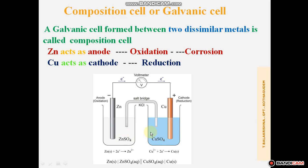When you construct this Galvanic Cell, these two metals have different compositions — one is Zinc, another is Copper. In these two compositions, one acts as the anode and the other acts as the cathode. A Galvanic Cell formed depending upon the composition is called a Composition Cell.